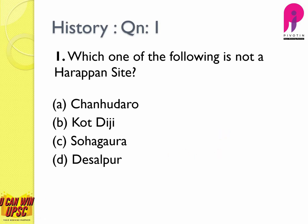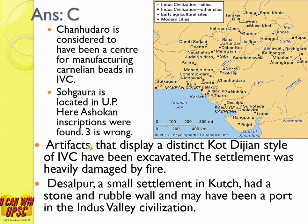Question number one: which one of the following is not a Harappan site? For this we have to use the elimination method. Chanhudaro — if you had read in the NCERT, it is very famous for bead industry, bangle beads especially. Dholavira was a place destroyed completely by fire. Sohagwara is in UP and this is the answer because it is not a Harappan site. Desalpur is in Kachchh and may have been used as a port in the Indus Valley civilization. The answer is C — Sohagwara — where Ashokan inscriptions were found. Dholavira, Chanhudaro, and Desalpur are all Harappan sites.